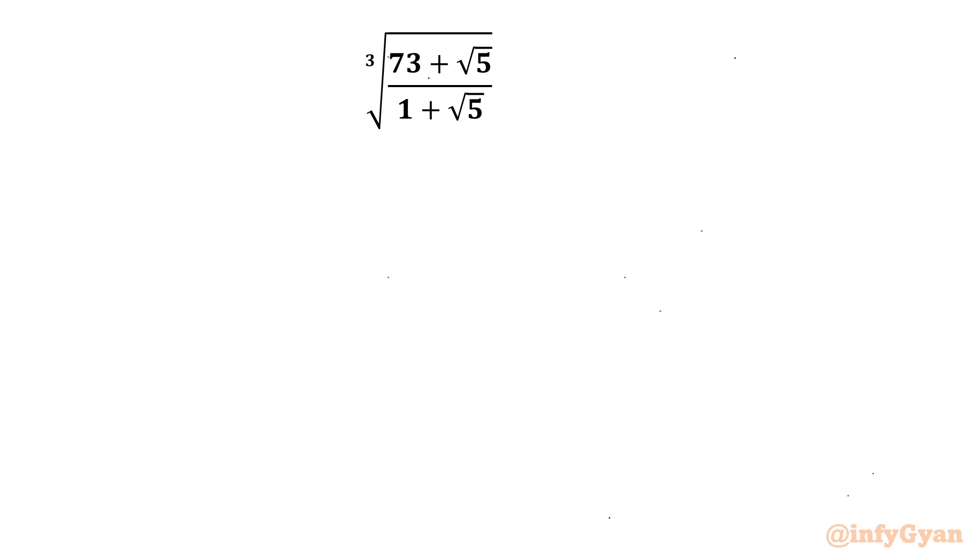I will be sharing two different ways to proceed with this question. So let me write here Method 1. Let us begin with writing the expression as x. So x is always positive for real values. Now I will consider cubing both sides. So cube root and power 3 we can cancel. So x cube I can write would be equal to 73 plus square root 5 divided by root 5 plus 1.